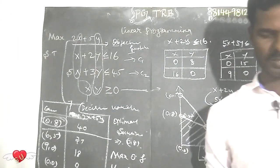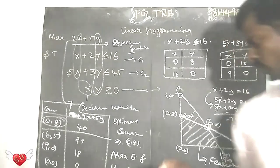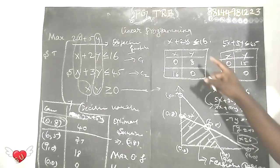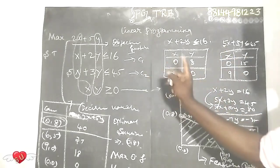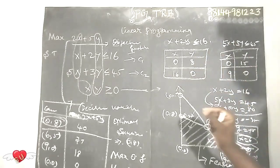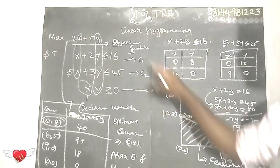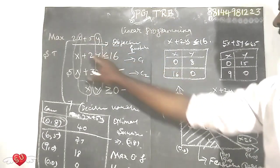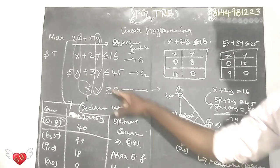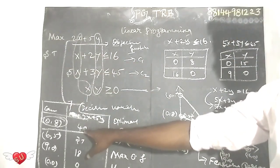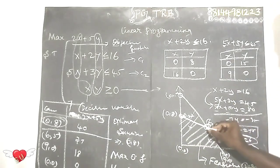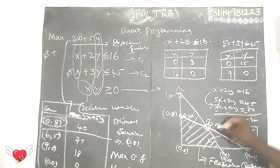So the corner extreme point is what we need to know. In the next video, we will see what the surplus and slack variables are. In this video, the objective function is the basic objective function with non-negative constraints. If you find the maximum value, it will be maximum 40. Look at the points; you can see the graph and easily see the equations and how to solve them.